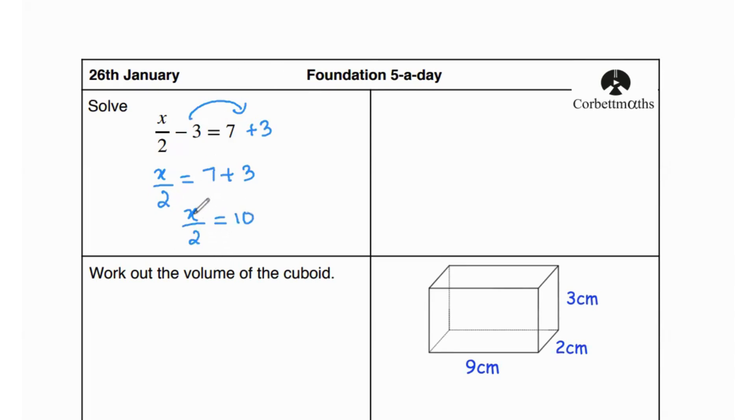Now on the left hand side we can see that x is being divided by 2. So when we move 2 to the other side, 10 is going to get multiplied by 2, not divided, which gives us 20.